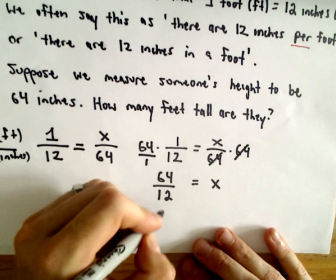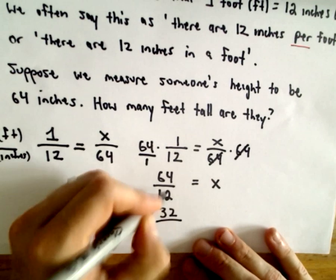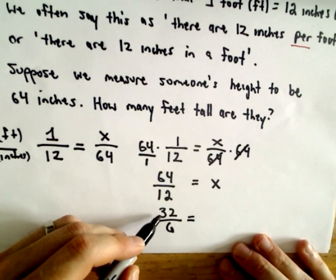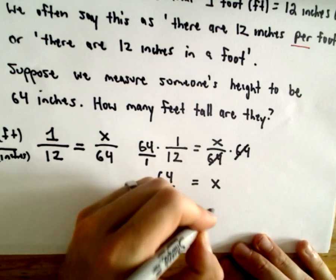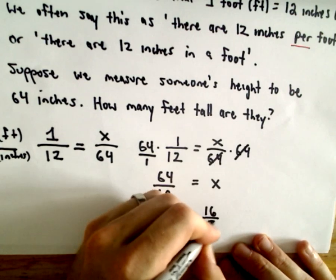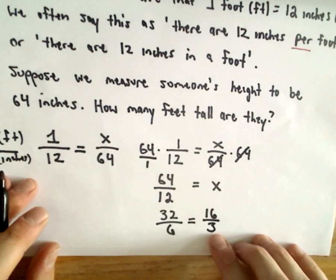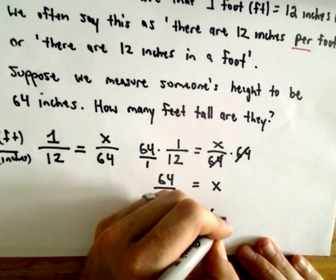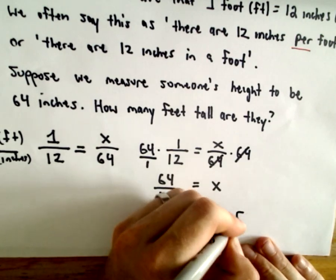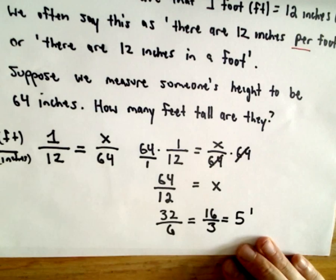I'm going to do some simplification first. These are definitely both even. If I divide by two, I'll get thirty-two over six. Well, these are still both even. I can reduce that a little bit more. Thirty-two divided by two, that's going to be sixteen. If we take six and divide it by two, that's going to be three. So three goes into sixteen.